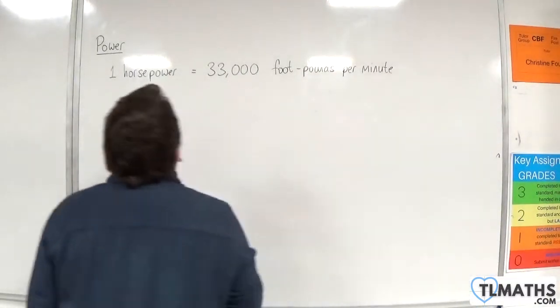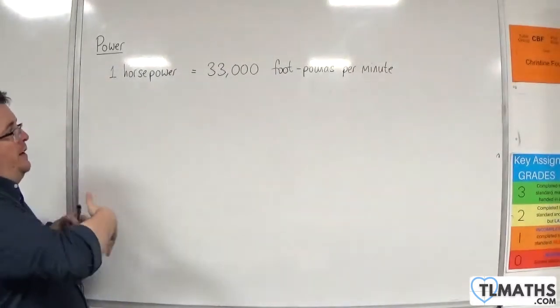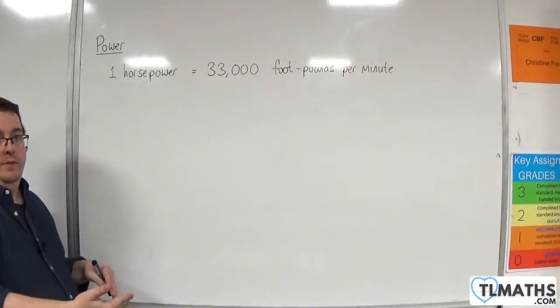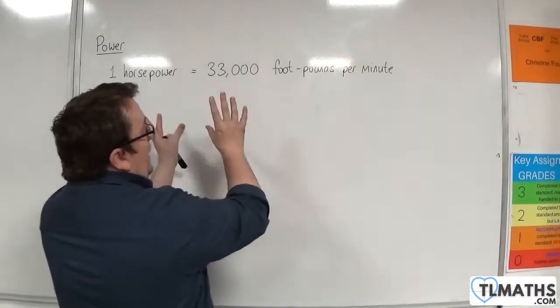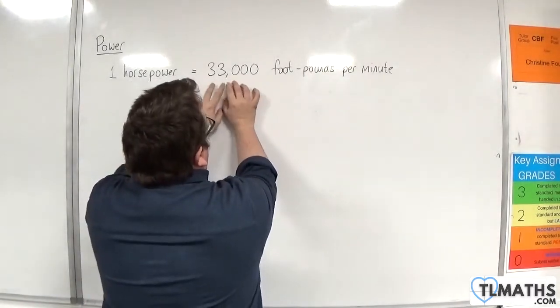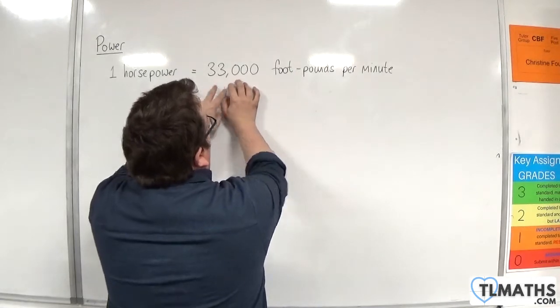That's essentially what we mean by 33,000 foot-pounds per minute. The number of feet and pounds multiply together to make 33,000, and that would be per minute.